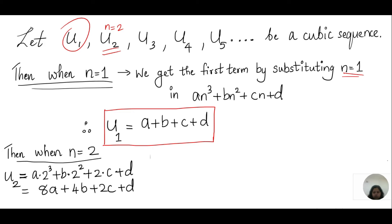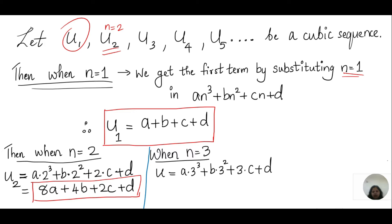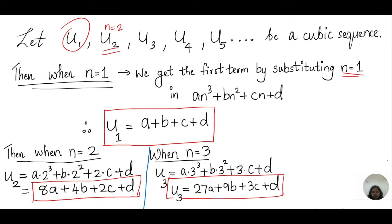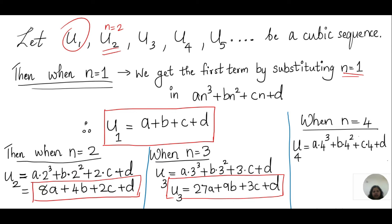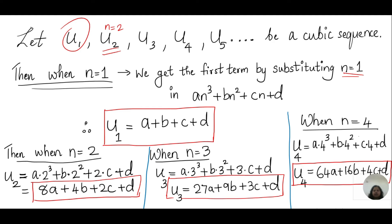Similarly, we can find the third and fourth terms. For the third term, n equals 3: substituting gives a times 3³ plus b times 3² plus 3c plus t, so u3 equals 27a plus 9b plus 3c plus t. For the fourth term, n equals 4: u4 equals a times 4³ plus b times 4² plus 4c plus t, which gives 64a plus 16b plus 4c plus t.